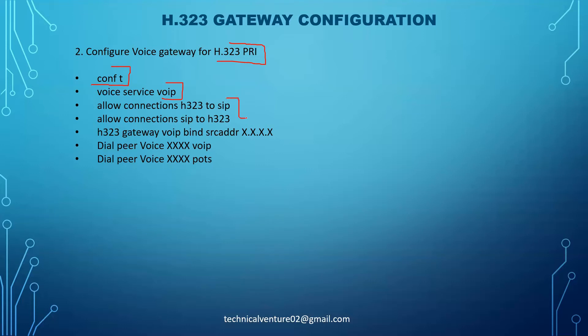Once in voice services VoIP mode, you push these commands: 'allow-connections h323 to sip' and 'allow-connections sip to h323'. This allows both directions - if a request comes from H323 it can convert to SIP, and if a request comes from SIP it can convert to H323. You need to allow these connections on the gateway.